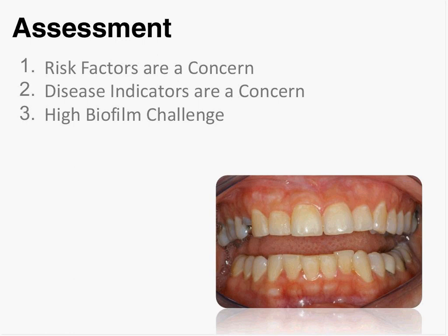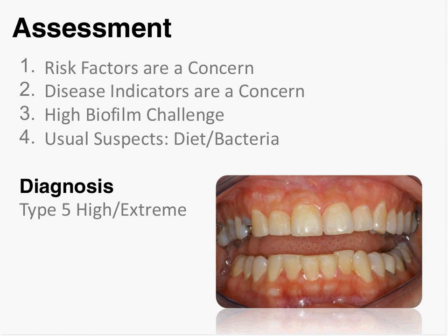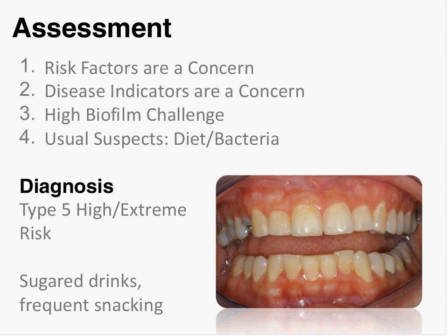I'm looking at her and thinking, usual suspects — she's got saliva, so I'm targeting diet and bacteria. Diagnosis for this patient: she's a type five, high and extreme risk. She drinks a lot of sugared drinks during the day and has frequent snacking. Between those two things, that's attributing mostly to this disease. She has too much sugar in her diet and is also eating too frequently. So primarily this is a dietary issue — we really need to focus on those behaviors and coach her through the dietary changes.